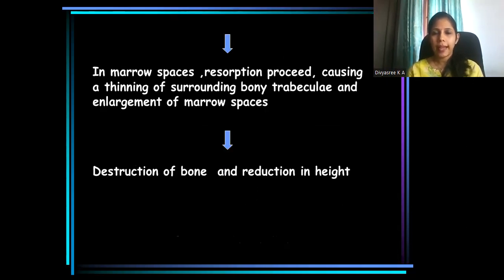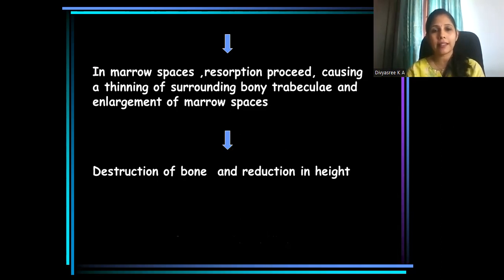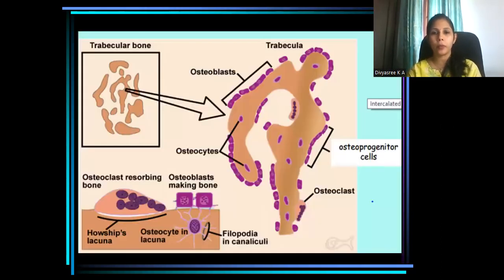As resorption progresses, there occurs thinning of bony trabeculae and enlargement of marrow spaces, ultimately resulting in destruction of alveolar bone height.